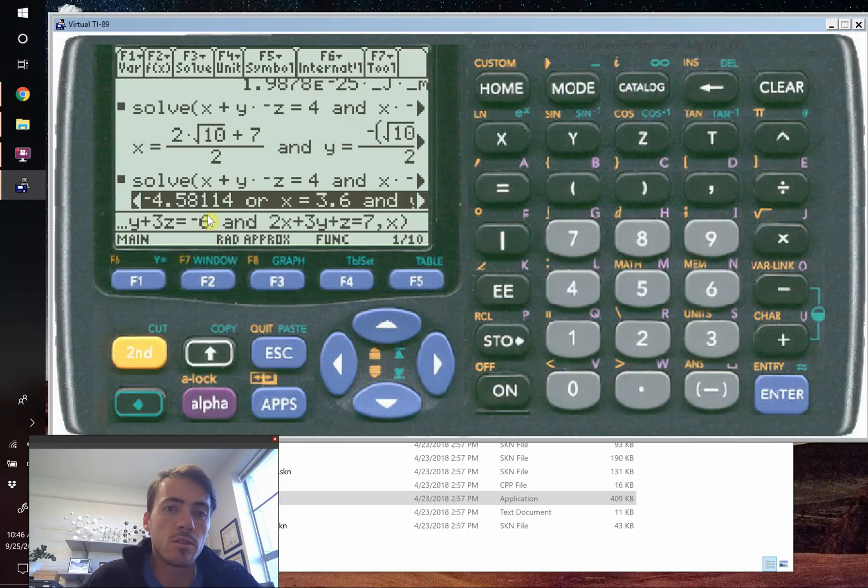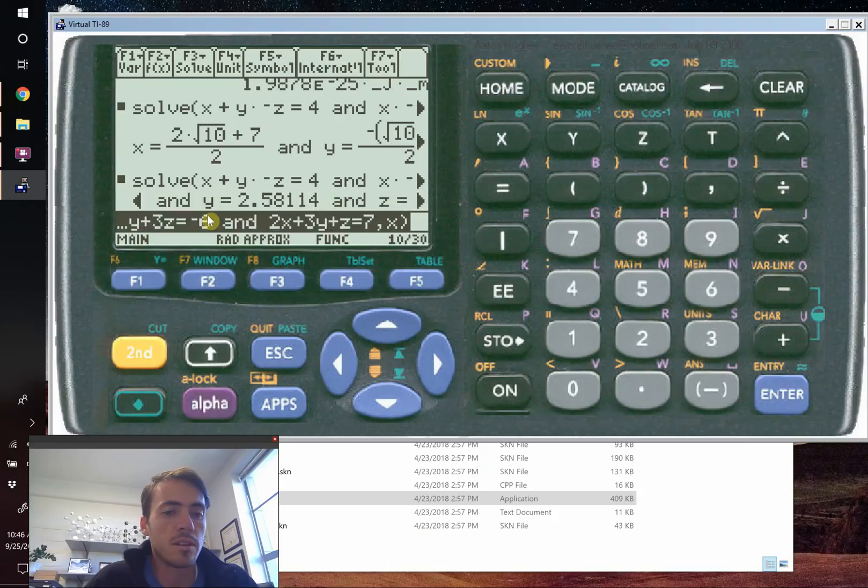Now in this case, there's multiple solutions available. So it says, or X could be this, Y could be that, and Z could be this, or this. So there's multiple solutions. In this system of equations, there's more than one solution. And so that's why it took so long to calculate it, is just spitting out multiple solutions. But that's how you use the solve function to solve systems of equations with your TI-89.